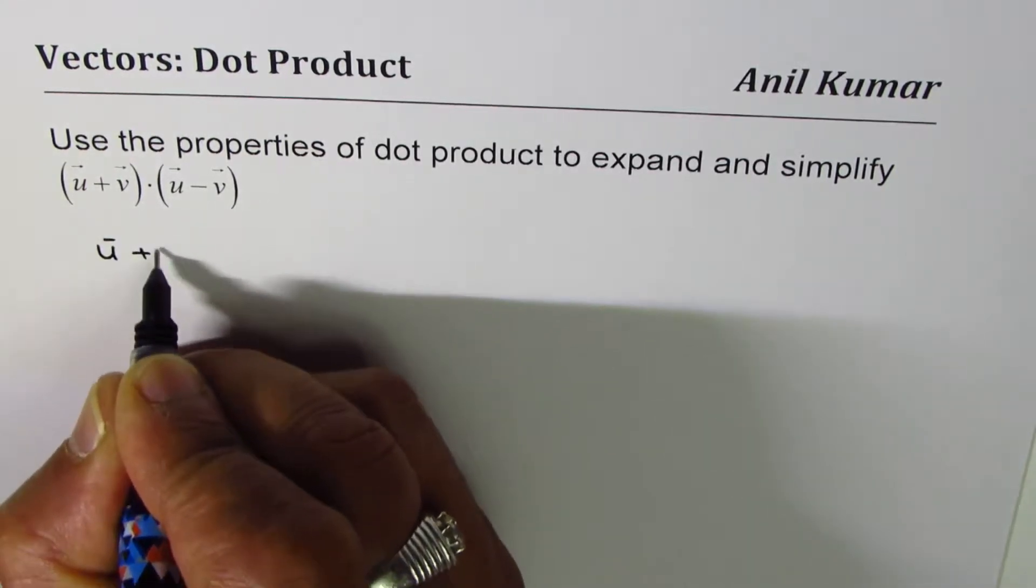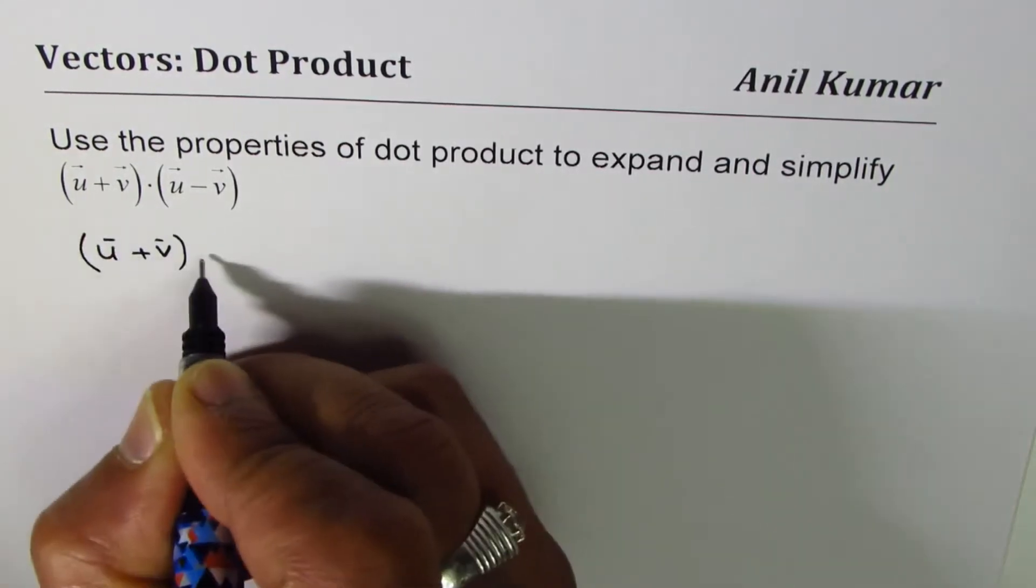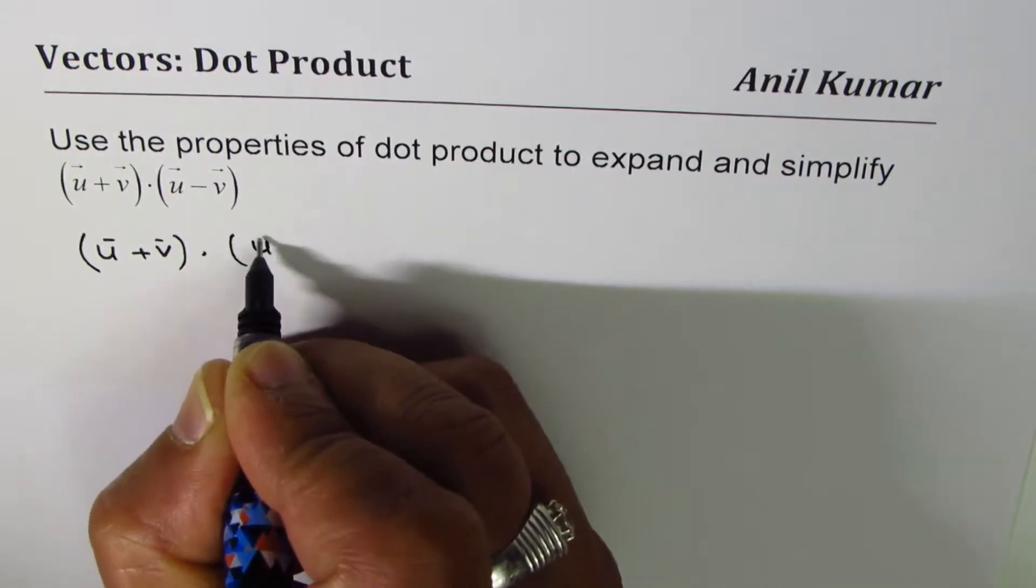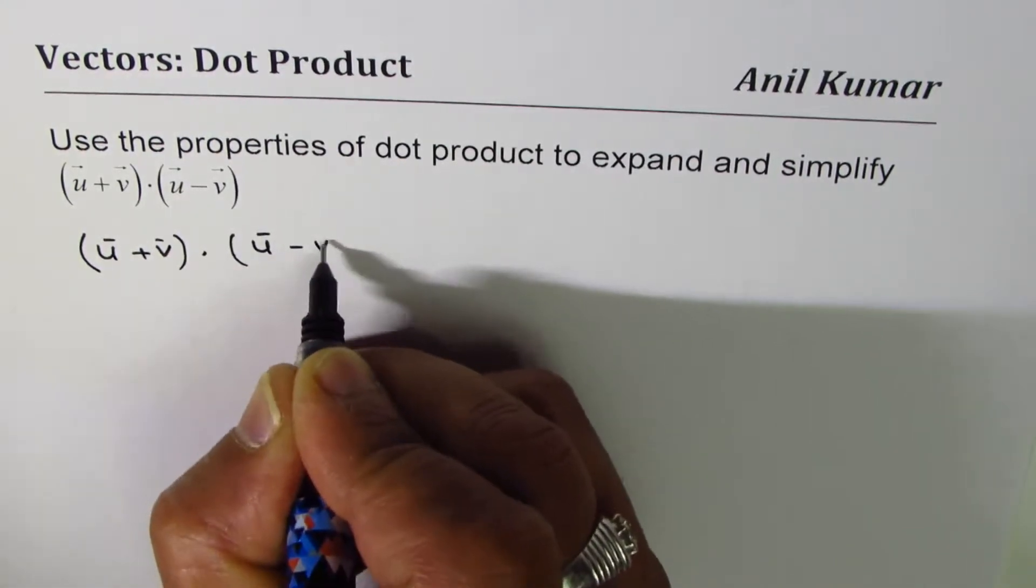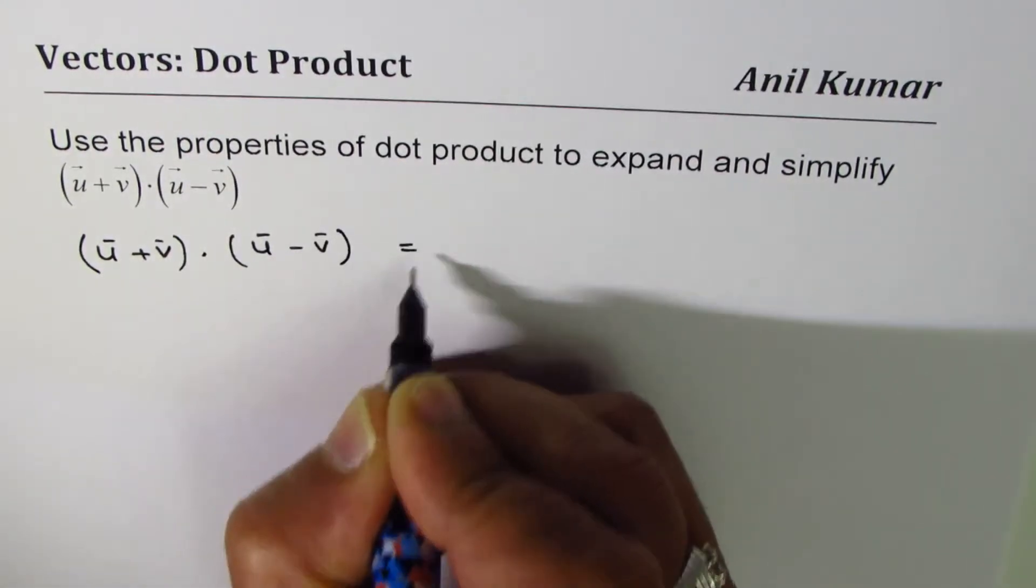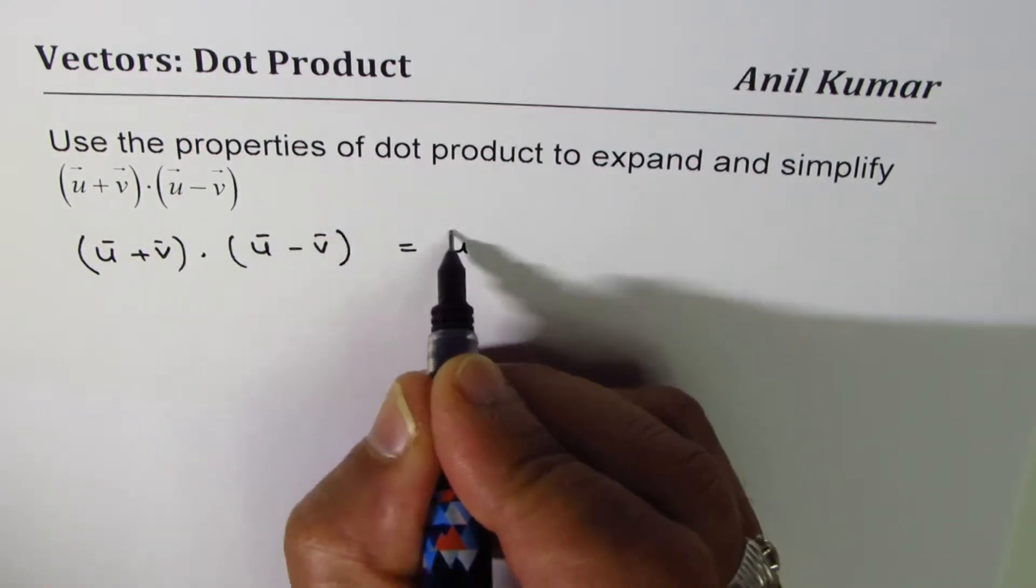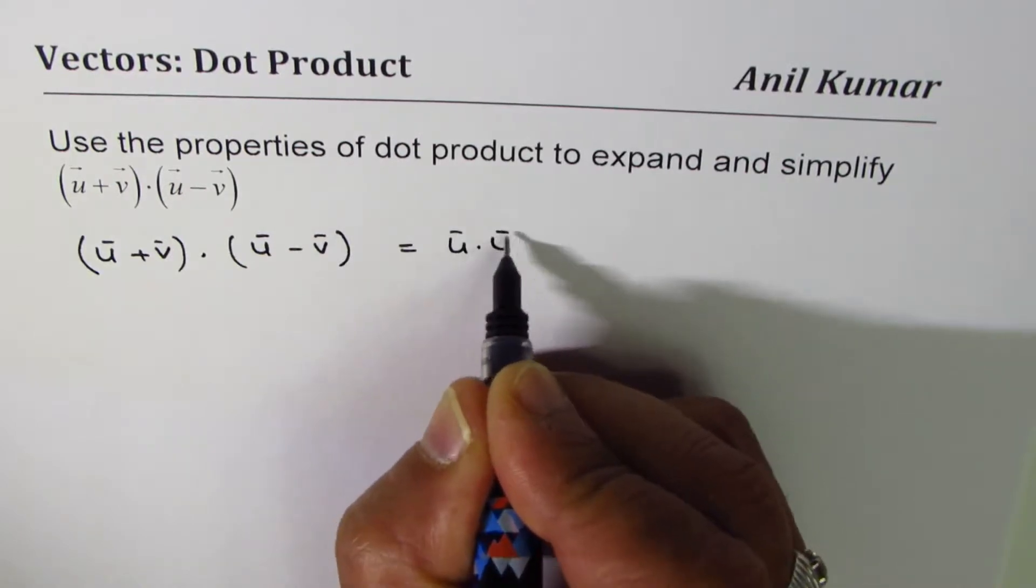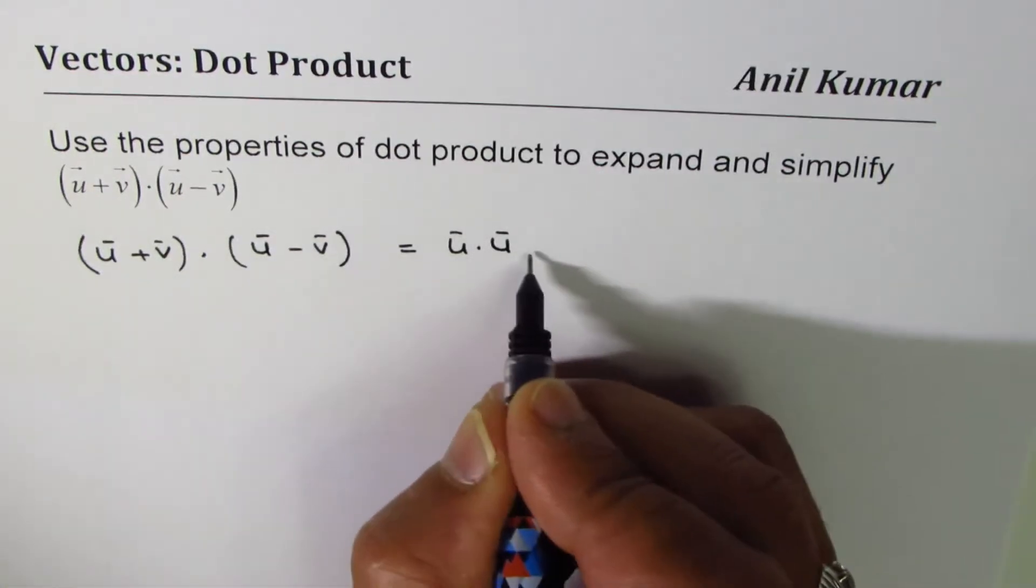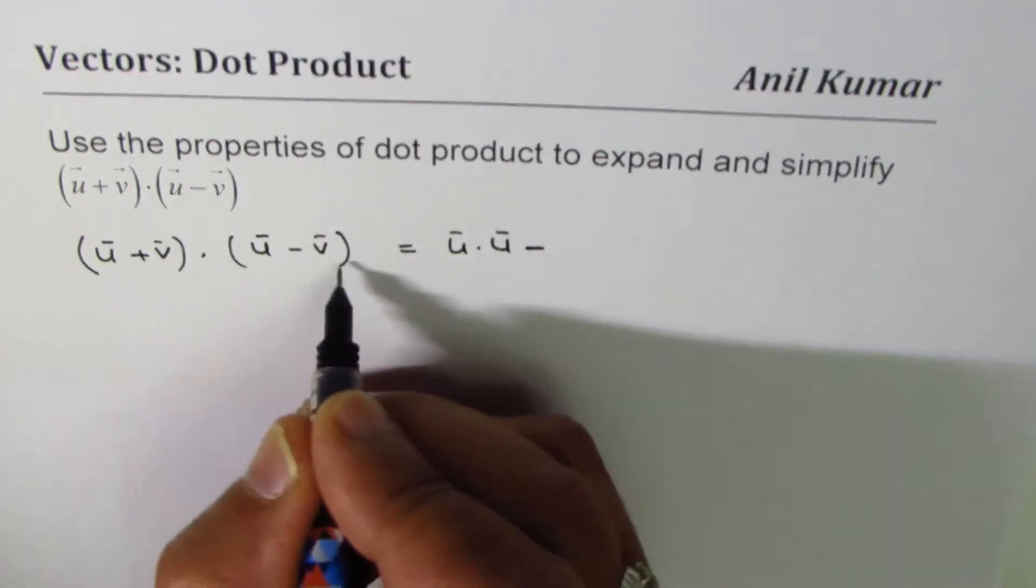The question is (u + v) dot (u - v). This could be written using the distributive property as u dot u, then minus u dot v.